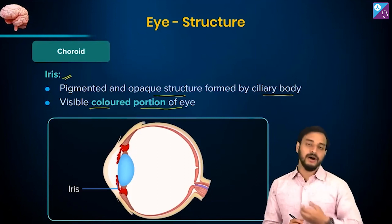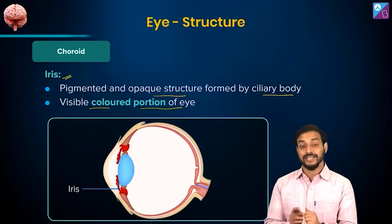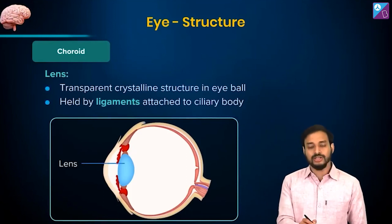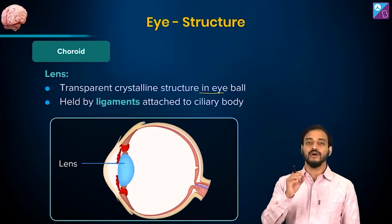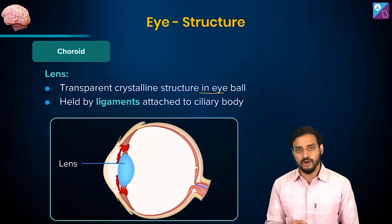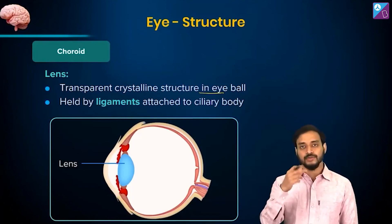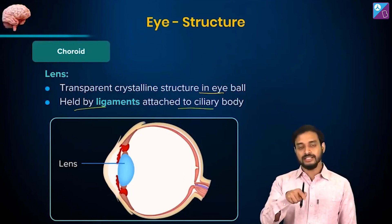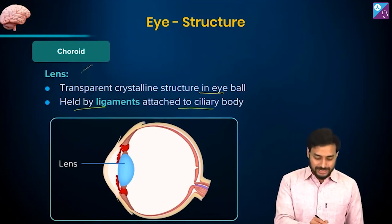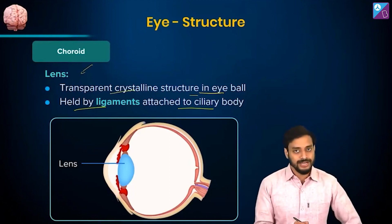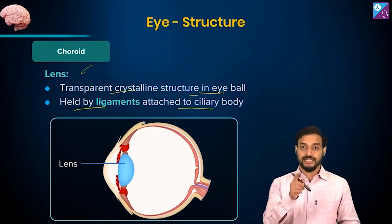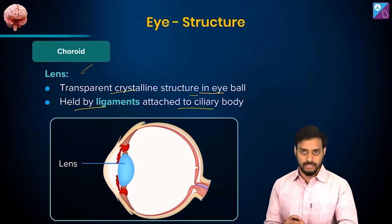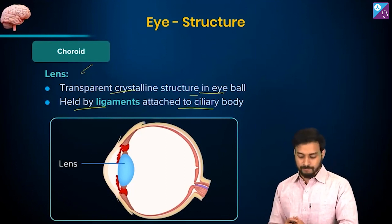Now the lens — a transparent crystalline structure in the eyeball. In physics, if you have studied the chapter on optics, you can relate to it. The human lens is a transparent crystalline structure held by the ligaments attached to the ciliary body. Its function is quite similar to the lens you study in physics, and these ligaments help in regulation of the lens.